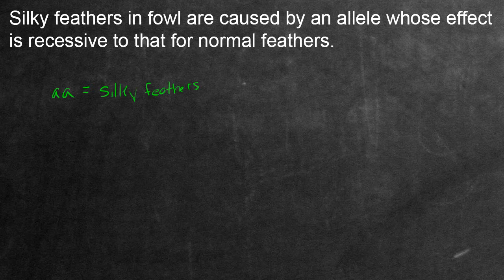Now, the question is, if 98 birds were raised from a cross between two individuals that were heterozygous, let's just stop right there. Two individuals that were heterozygous means you have a capital A, or the dominant allele, and you have the recessive allele. So it's a cross between two individuals that were like this.